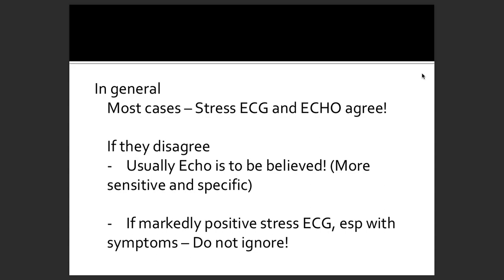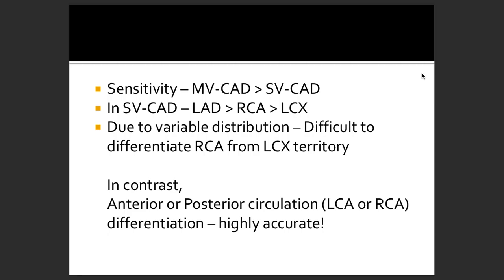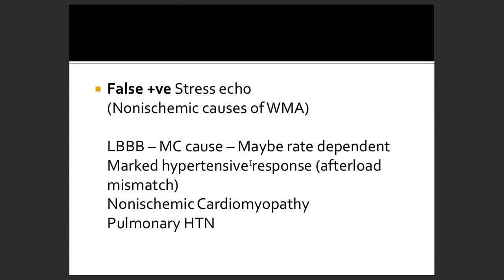Regional wall motion abnormality is a very good marker for detection of coronary artery disease. False negativity should be ruled out especially in hypertensives or with concentric remodeling. Overall specificity is about 75 to 90 percent. LAD has the biggest territory so regional wall motion abnormality there should be trusted. There can be false positives in pulmonary hypertension, left bundle branch block, or non-ischemic cardiomyopathy patients.